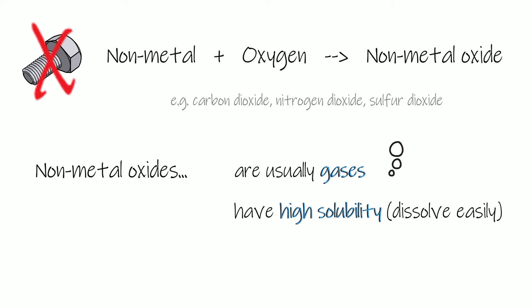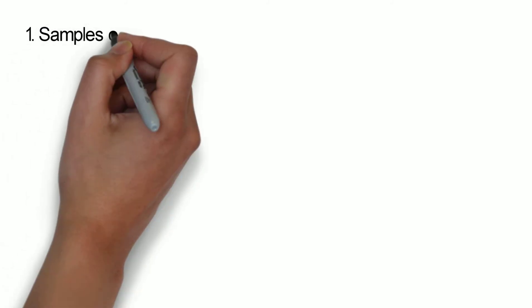So sulphur dioxide can dissolve in water and that's what causes acid rain. Because they form an acidic solution when they do dissolve in water. So they form a solution with a low pH below 7 and that's why they form things like acid rain when they dissolve in water.